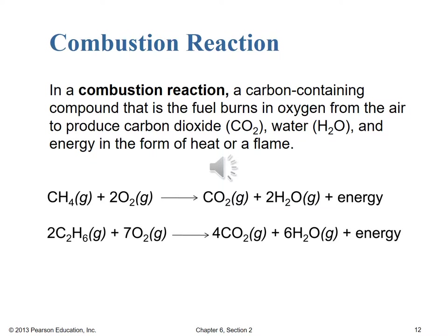We see a couple of examples. Methane gas, CH4, is the principal component of natural gas used for heating homes and cooking. It combines with diatomic oxygen from the air to make carbon dioxide and water vapor. It's important that there's enough oxygen, because with less oxygen you get carbon monoxide instead of carbon dioxide — so a carbon monoxide detector is essential. Our second example is ethane, C2H6, a slightly heavier and smaller component of natural gas, which also combines with oxygen to give carbon dioxide and water vapor plus lots of energy.